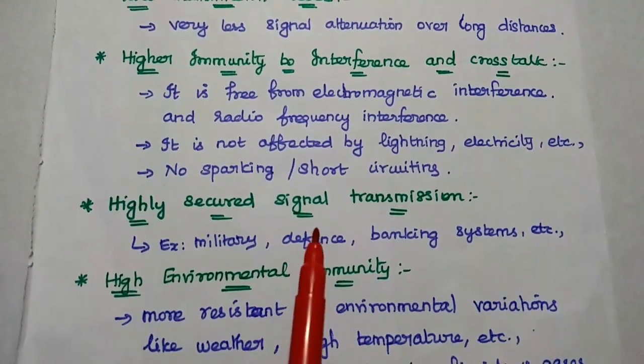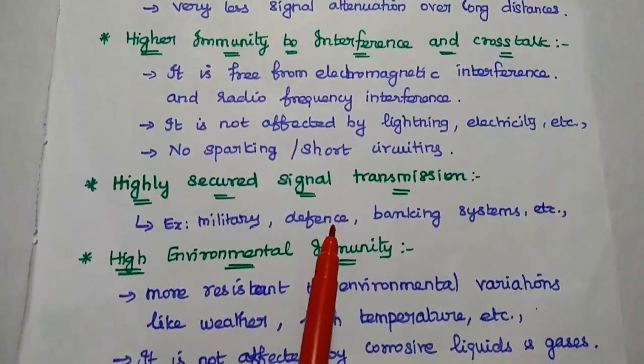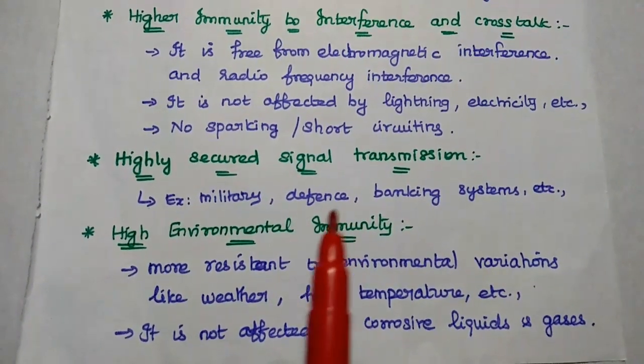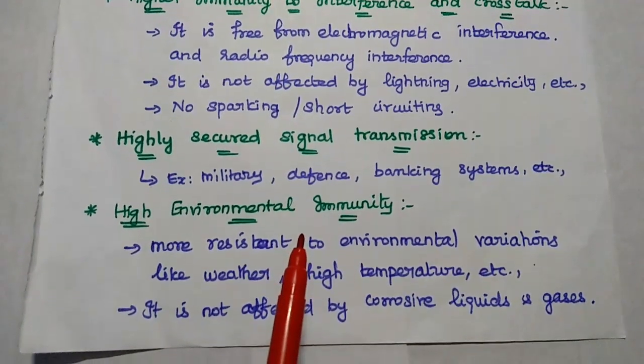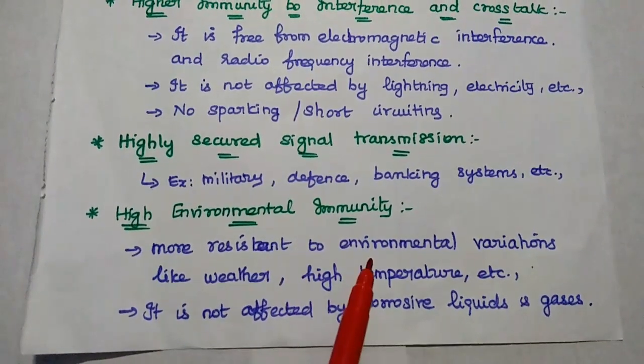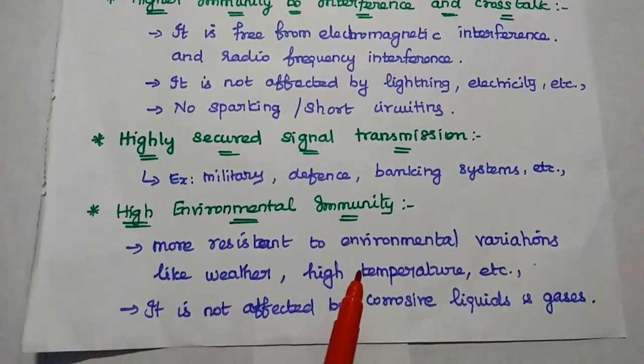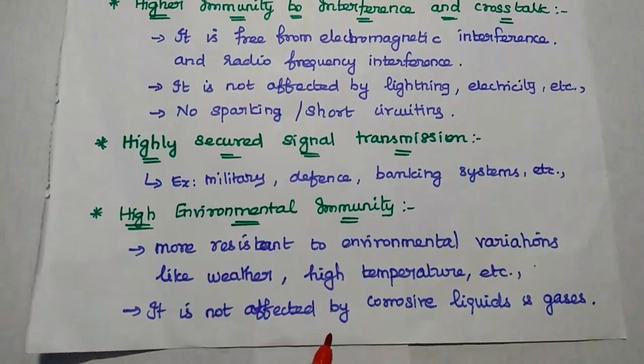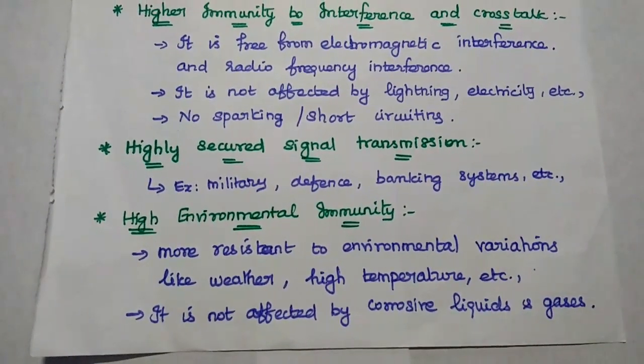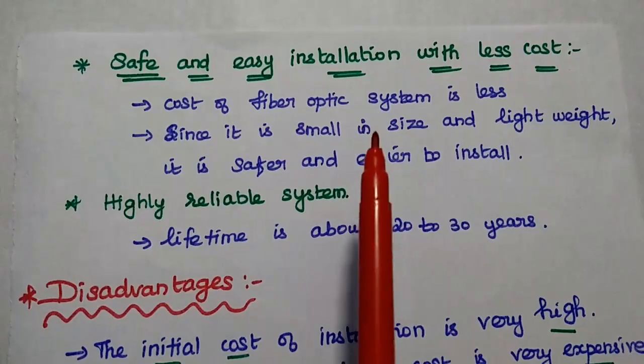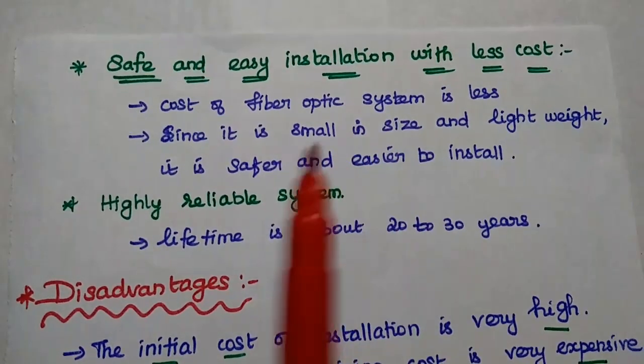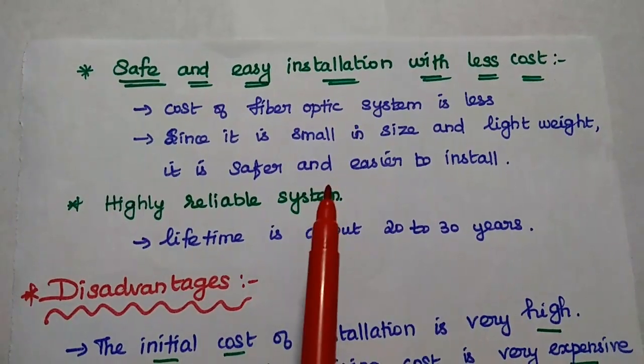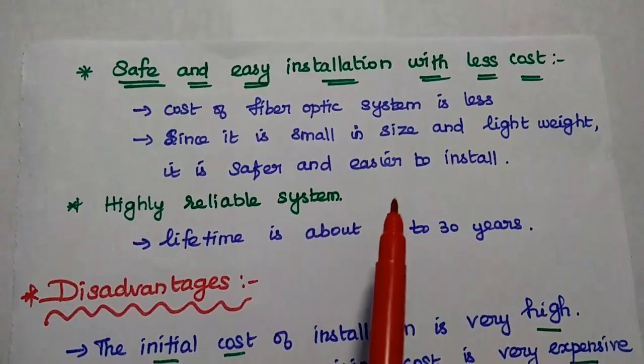It is highly secured transmission system, so it can be used for military defense, banking system, and data communication. Here it has very high immunity level for environmental changes. It is more resistant to environmental variations like weather, high temperature, etc. It is not affected by corrosive liquids and gases. Next one is safe and easy installation with less cost. Here, the cost of fiber optic is less. Since it is small in size and lightweight, it is safer and easier to install.